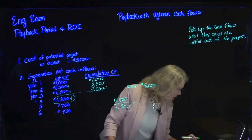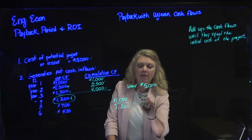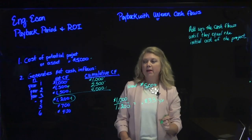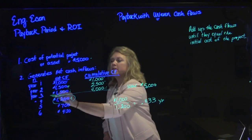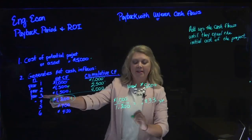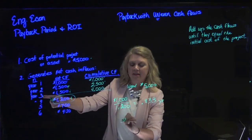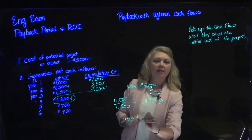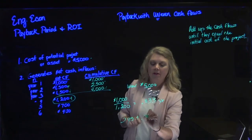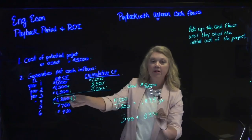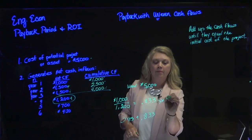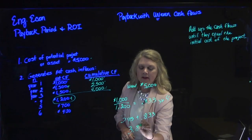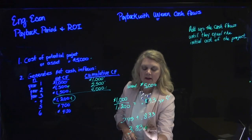That gives us a ratio of 0.833 of a year. So we've achieved payback in three years plus 0.833 of a year — 0.833 of year four. We can see we've achieved payback in 3.83 years. And you can turn that into months if you want to as well.